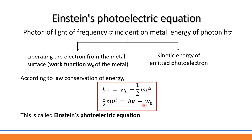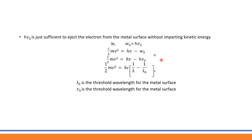Einstein's photoelectric equation is: (1/2)mv² = hν − W₀. For photoelectric emission to occur, the incident radiation energy must be greater than or equal to the work function of the metal. The minimum frequency required is called the threshold frequency, and W₀ equals h times the threshold frequency.